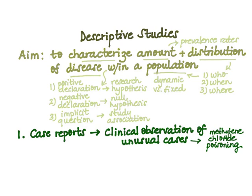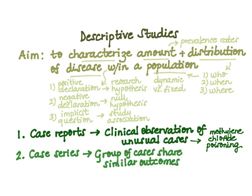Number two: case series, which are defined as a group of cases — not a single one — that share similar adverse health outcomes. An example would be looking at five different cases of hantavirus pulmonary syndrome.